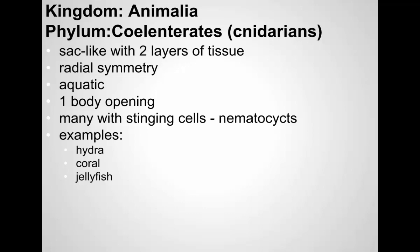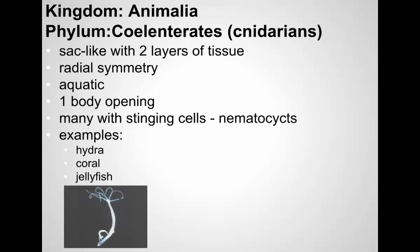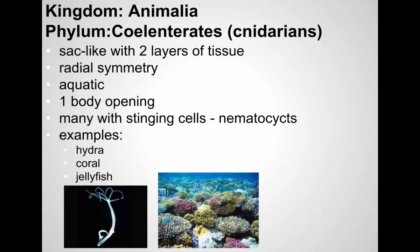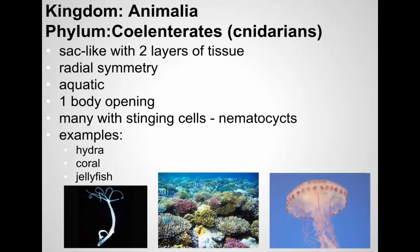Then we have the cnidarians, sometimes called coelenterates. These are sac-like organisms that do have true tissues, just in two layers. They generally have radial symmetry and are also aquatic. They have one body opening where food goes in and waste leaves. Many of these have stinging cells — if you've ever got stung by a jellyfish, it's a cnidarian. They have stinging cells called nematocysts, which they use for feeding and for protection. Hydra, coral, and jellyfish are all cnidarians.